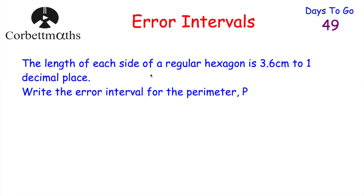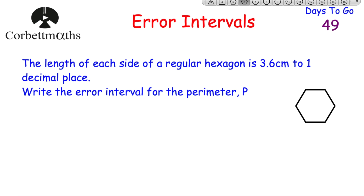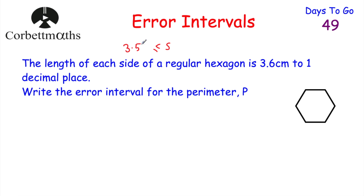Our next question says the length of each side of a regular hexagon is 3.6 centimetres to one decimal place. Write down an error interval for the perimeter p. With a regular hexagon all sides have the same length. Let's call each side s — the lowest possible side length that rounds to 3.6 is 3.55 centimetres, and the side can go up to but not include 3.65 centimetres. So the error interval for each side is: 3.55 ≤ s < 3.65 centimetres.